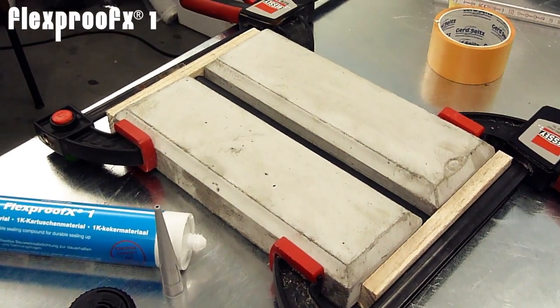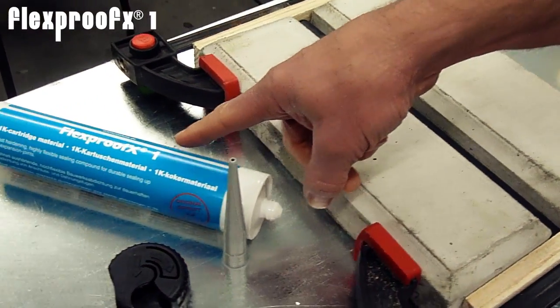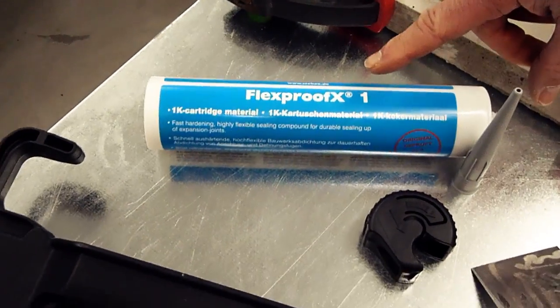To seal up a joint in between two concrete elements, we recommend to use our single component sealant mass FlexProof X1.